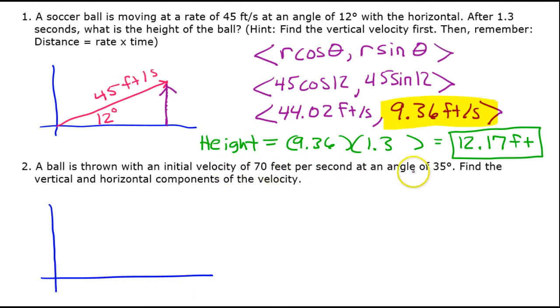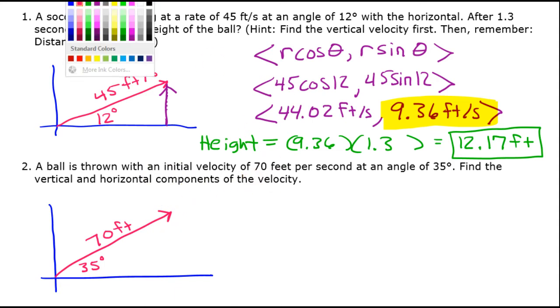70 feet at an angle of 35 degrees. So this velocity of 70 feet at an angle of 35 degrees.